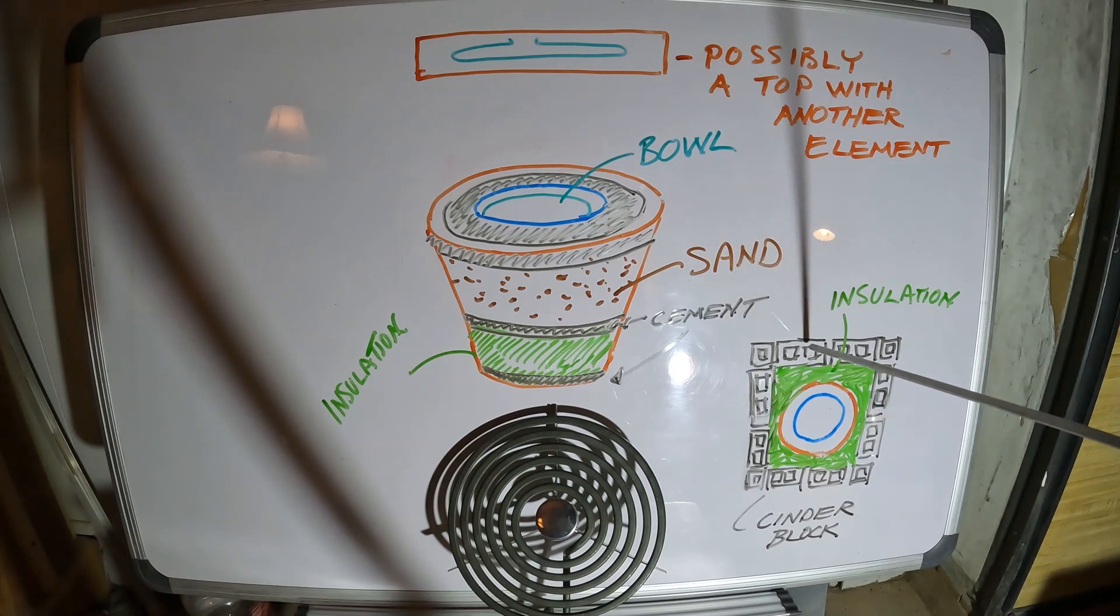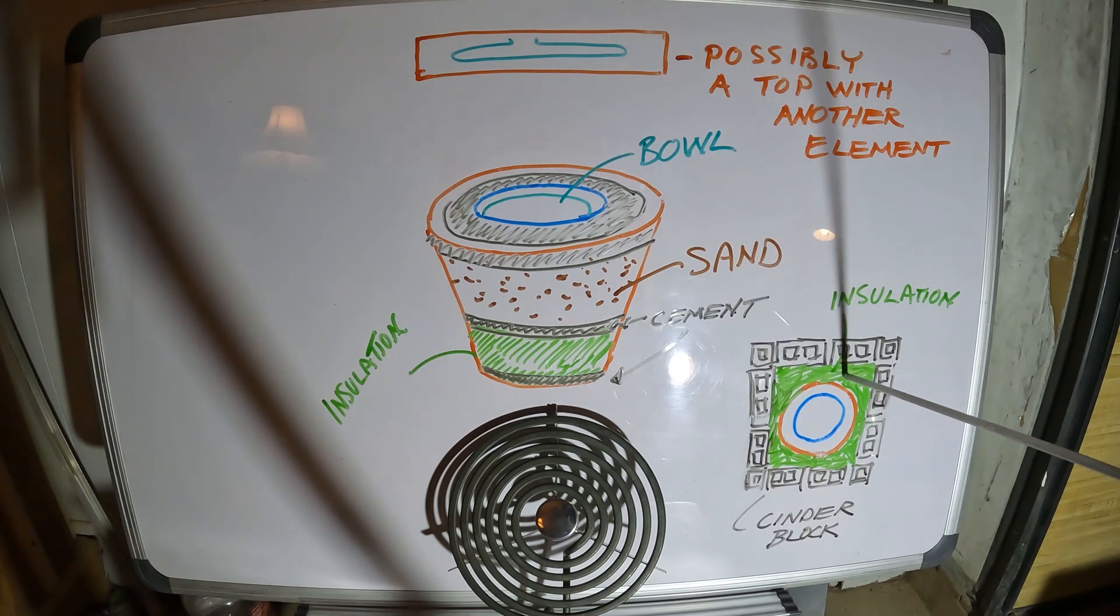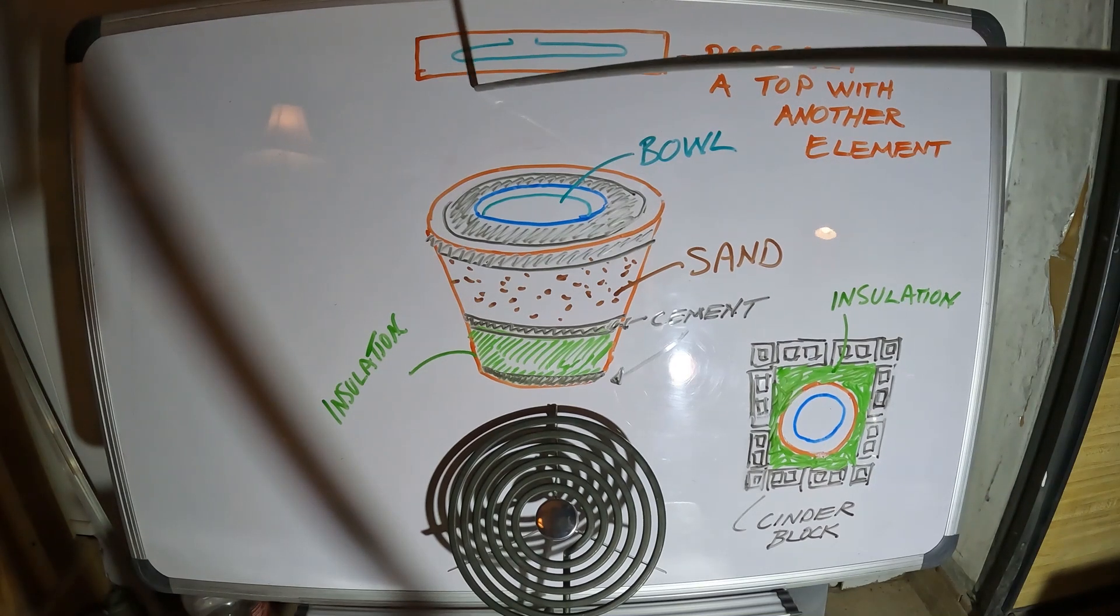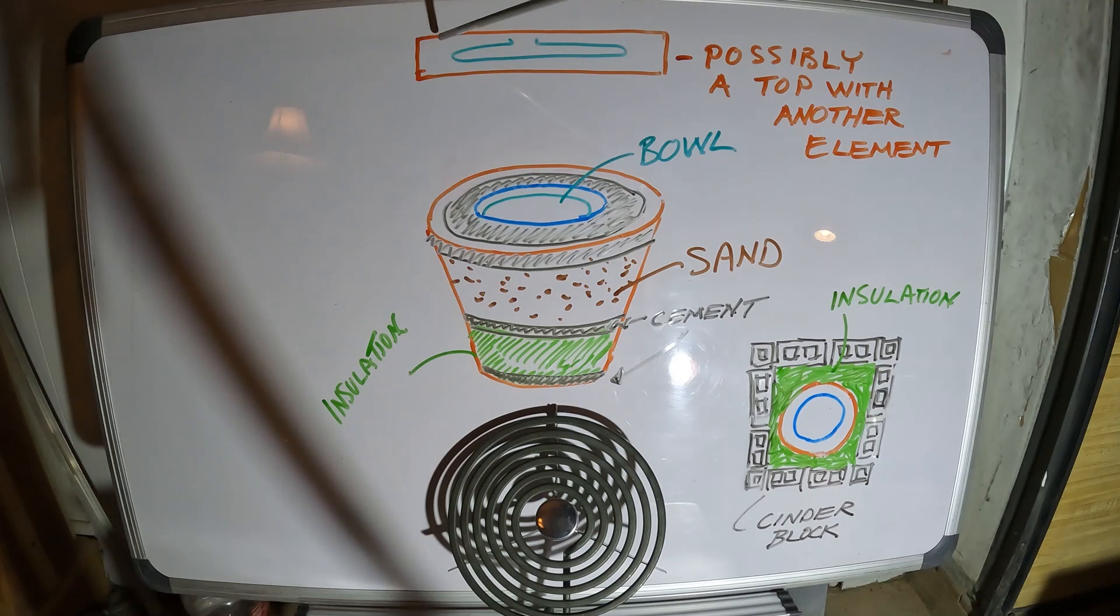This is a plan view, rough - I could change it. But I'm thinking cinder blocks, some more insulation, that high temperature insulation on the outside of the terracotta pot. And then I'm probably going to make another top out of concrete or cement.